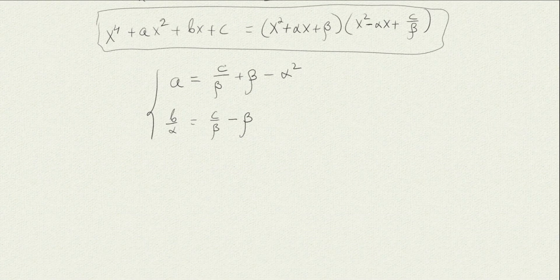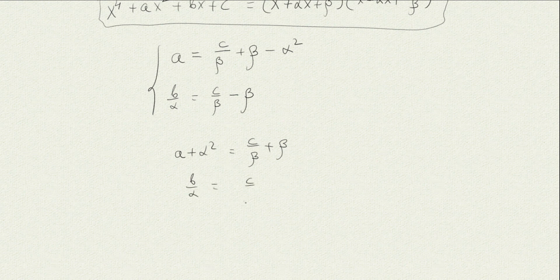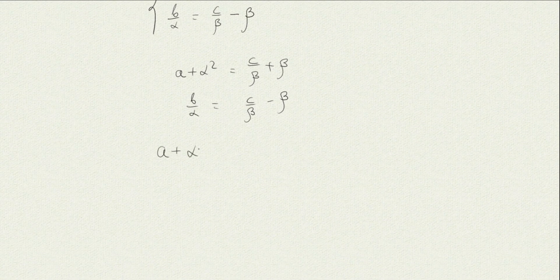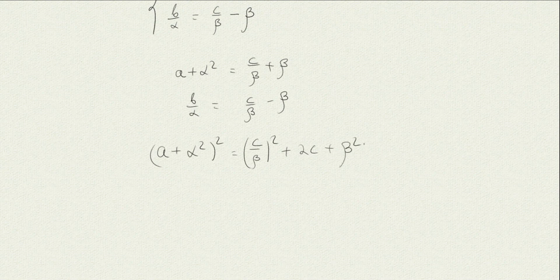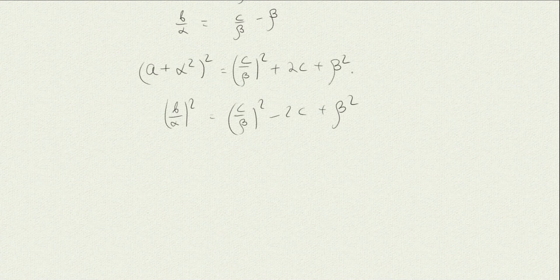Let's solve for α and β. We have a + α² = β + c/β and b/α = β − c/β. Squaring both sides of each equation: (a + α²)² = (β + c/β)² = β² + 2c + c²/β², and (b/α)² = (β − c/β)² = β² − 2c + c²/β².